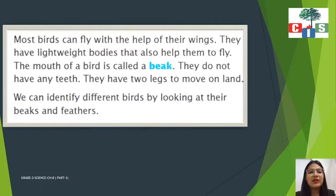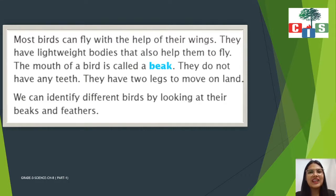Most birds can fly with the help of their wings. They have lightweight bodies that also help them to fly. The mouth of a bird is called a beak. We have seen that there are different kinds of beaks on different birds. They do not have teeth — birds have beaks. They have two legs to move on land, and they fly with the help of their wings.